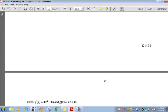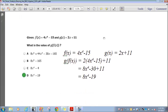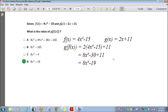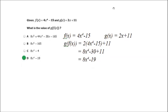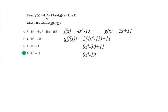Let's go on to question 23. Given f of x equals 4x to the 4th minus 15 and g of x equals 2x plus 11, what is the value of g of f of x? That's a composite function. f of x is 4x to the 4th minus 15 and g of x is 2x plus 11.